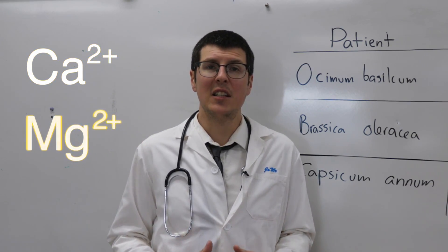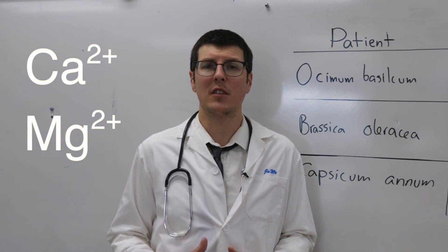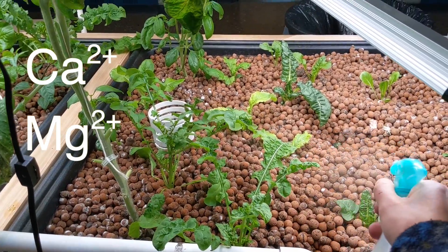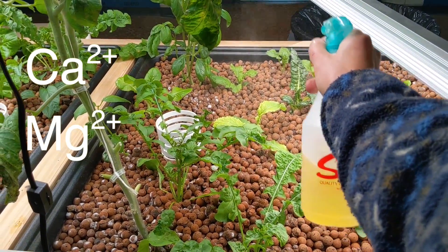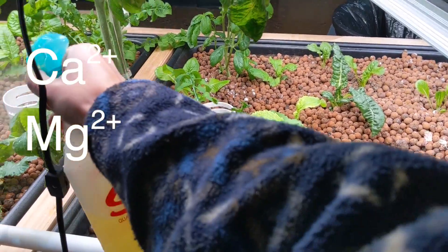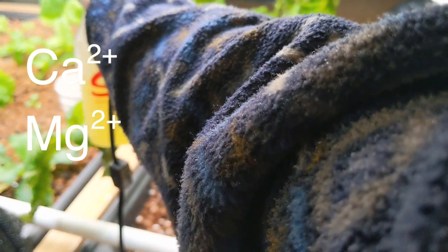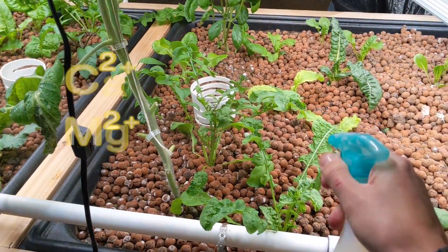We've been applying calcium and magnesium as needed in the form of a foliar spray. We have this General Hydroponics CalMag from some of our original hydroponics projects and have dissolved a small amount in a spray bottle. We apply this solution directly to the plants in the grow beds.